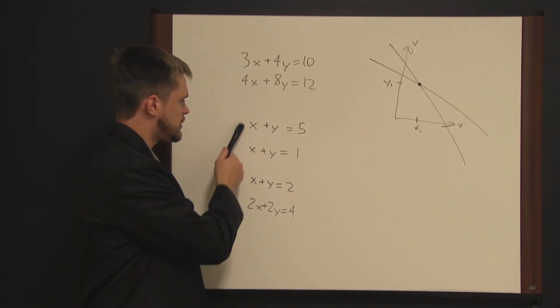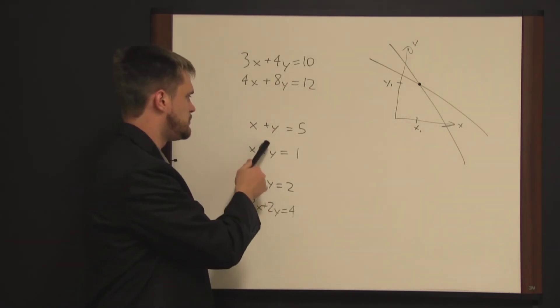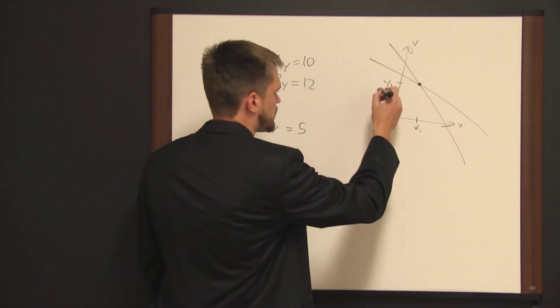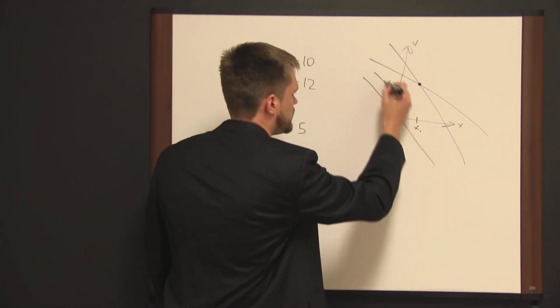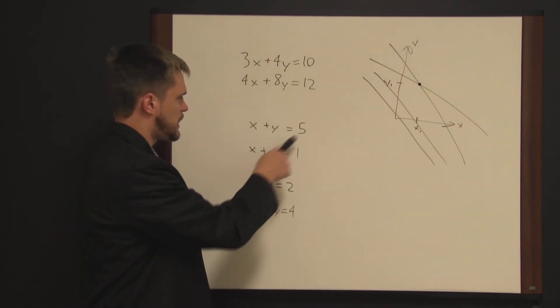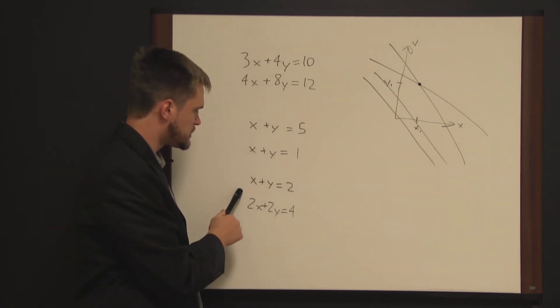And in this case here, where we have the contradictory equations, this would essentially be parallel lines. The equations x plus y equals 5 and x plus y equals 1 would look something like this. You'd have these two parallel lines that never intersect. And so, that's why you can't solve these for either variable.